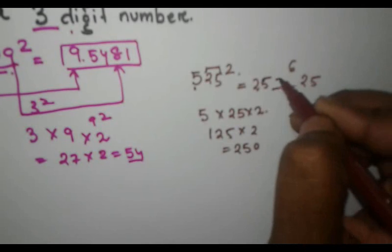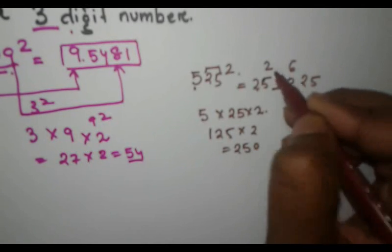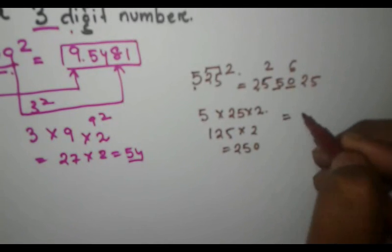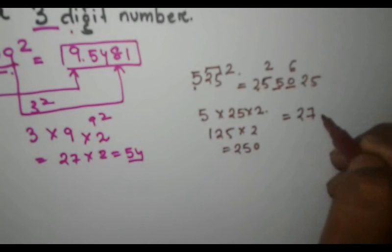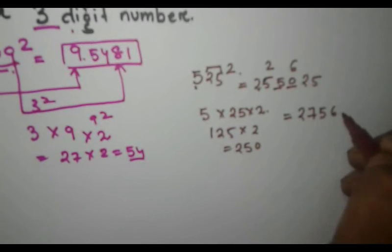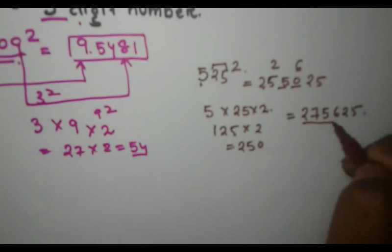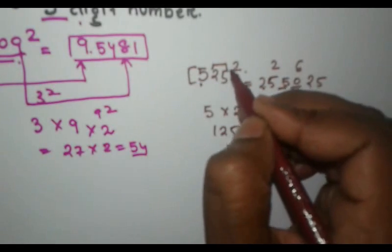So again, we have 2 places. We will write 50 and 2 will carry. Now if we add it, we will get 2, 7, 5, 6, 2 and 5. So this is the square of 525.